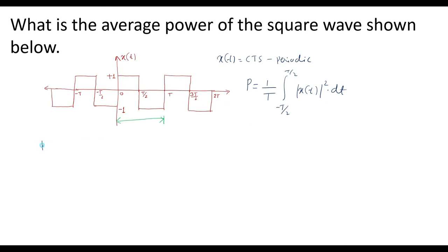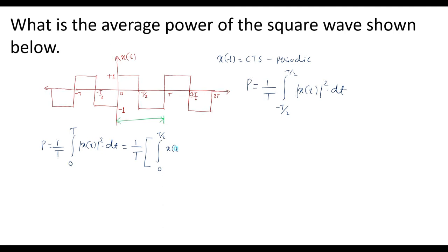Therefore, I can write the power equation as P = (1/T) times the integral from 0 to T of x(t)² dt. I will split this into two parts: the integral from 0 to T/2 of x(t)² dt, plus the integral from T/2 to T of x(t)² dt.